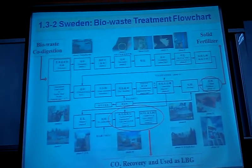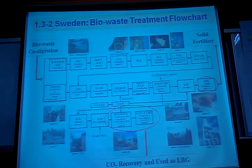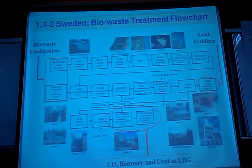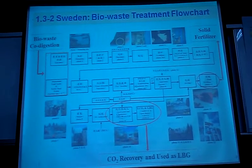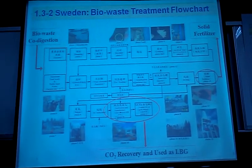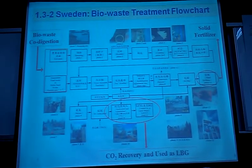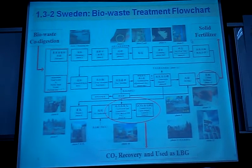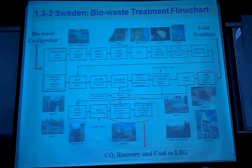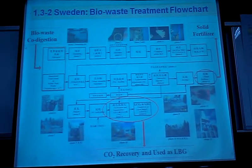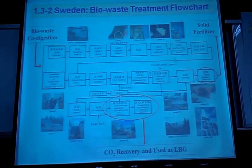Another example is from Sweden. They use different types of bio-waste — from animal waste, kitchen waste, sewage sludge — through a series of removal processes. They can generate methanol, biogas, and use it as transport fuel. Some solid waste can be converted to fertilizer for agricultural use. Using various techniques, they convert bio-waste into very useful products for different areas.